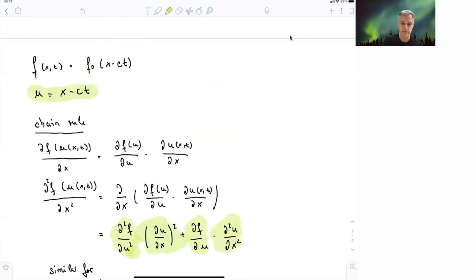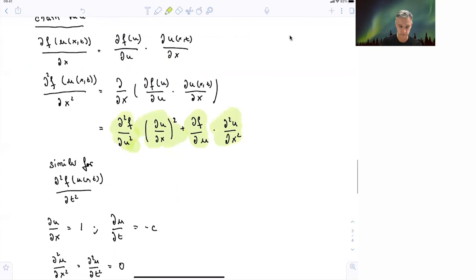du dx, the derivative of x minus ct with respect to x, I find 1. To do the same with t, I find minus c.